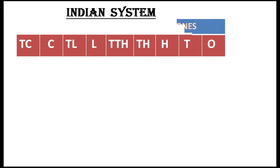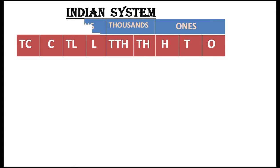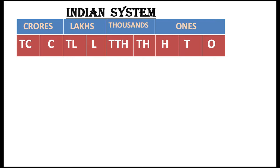Here, ones, tens, and hundreds are in the ones period. Thousands and ten thousands are in the thousands period. Lakhs and ten lakhs are in the lakh period, and crores and ten crores are in the crore period.